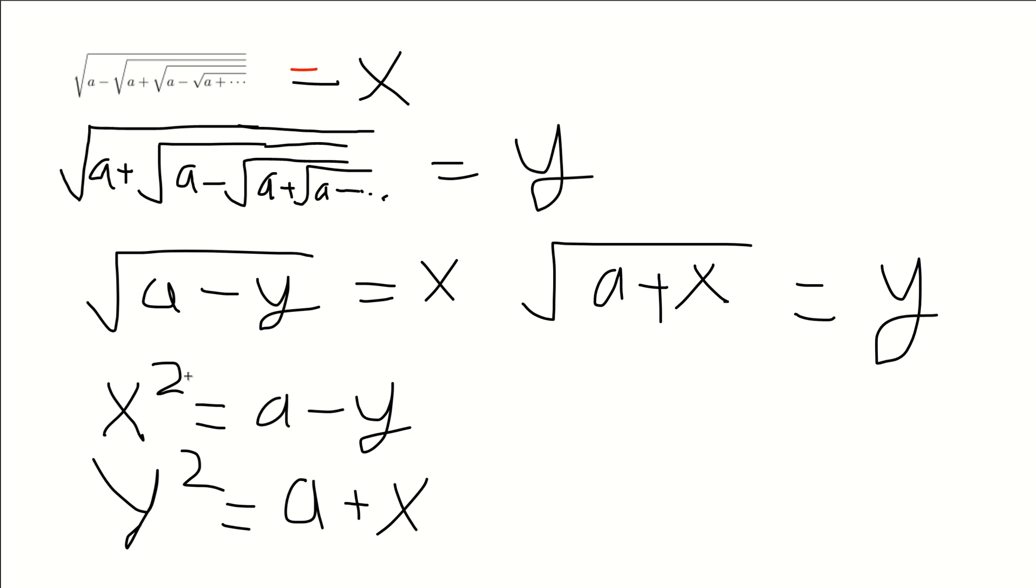And then what we can do is we can subtract this equation from this equation, canceling out the a's to get a relationship between x and y. So we get y squared minus x squared is equal to x plus y.